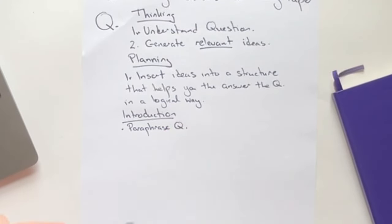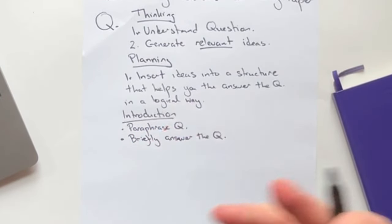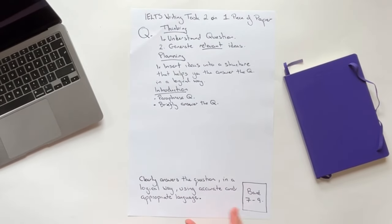What this does, when you paraphrase the question, it helps the examiner know that you have clearly understood the question. Because if you don't understand the question, you cannot paraphrase it. And then you're going to briefly answer the question. So you're simply introducing the answer to the question. Why do we do that?